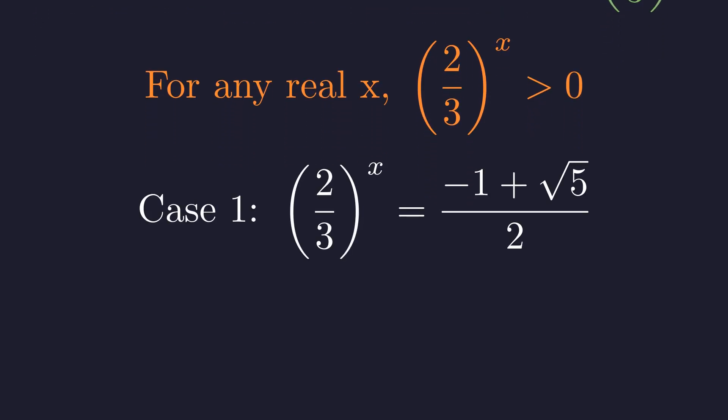Let's analyze our first solution: y equals negative 1 plus the square root of 5, all divided by 2. Is this a valid solution for our original equation? For the first solution, approximately 0.618, we have a positive value. Since any exponential function with a positive base must have a positive value, this solution is mathematically consistent with our original context.